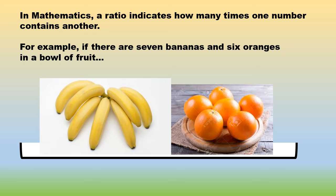As you can count, there's 7 bananas and 6 oranges in a fruit bowl. So you can indicate this or represent this as a ratio, 7 to the ratio 6. For every 7 bananas, there are 6 oranges.